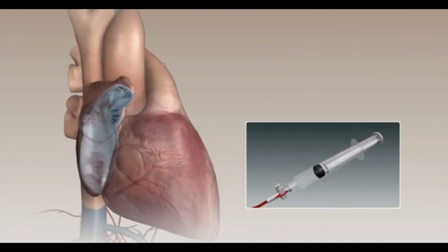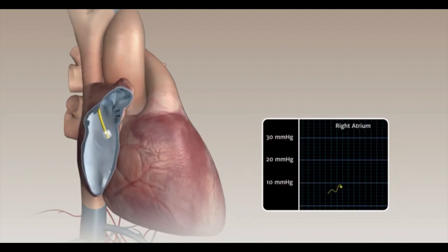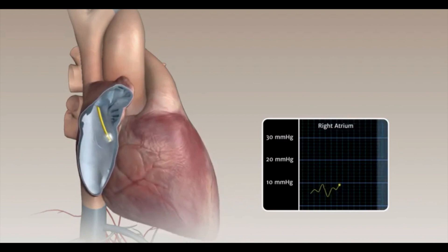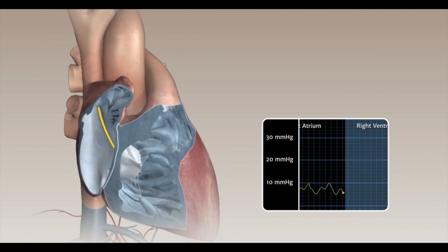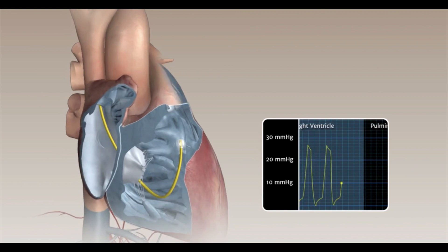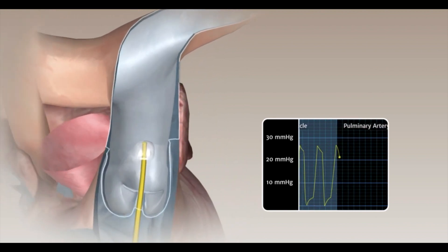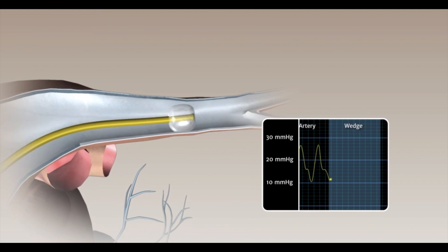The procedure involves the insertion of a pulmonary artery catheter into the right side of the heart and into the arteries that lead to the lungs. The pulmonary artery catheter has a balloon tip on the end. The balloon allows the catheter to be carried by the flow of blood to help the catheter move smoothly through the blood vessels and into the right chamber of the heart.